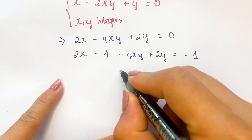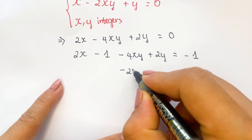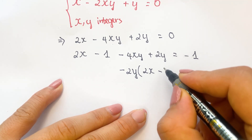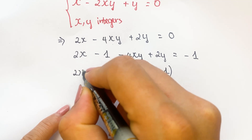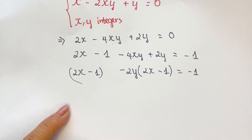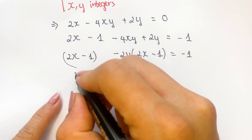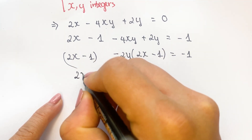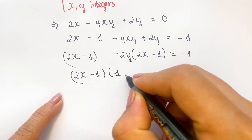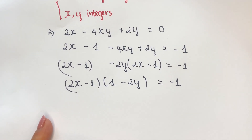Everyone can see that 2y is a common factor — 2y. In bracket, we can have 2x minus 1. And here, 2x minus 1 equals minus 1. Everyone can see 2x minus 1 is also a common factor. So in bracket, we can have 1 minus 2y equals minus 1.